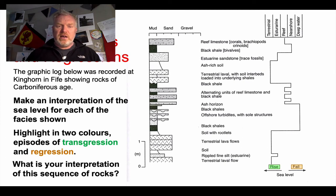I also asked you, then, to highlight episodes of transgression and regression. I've highlighted transgression in green, regression in orange.